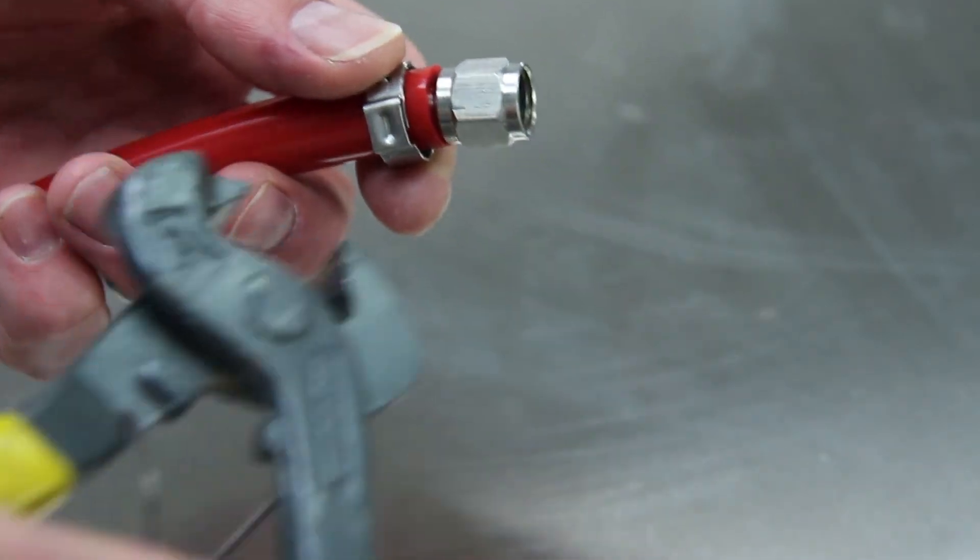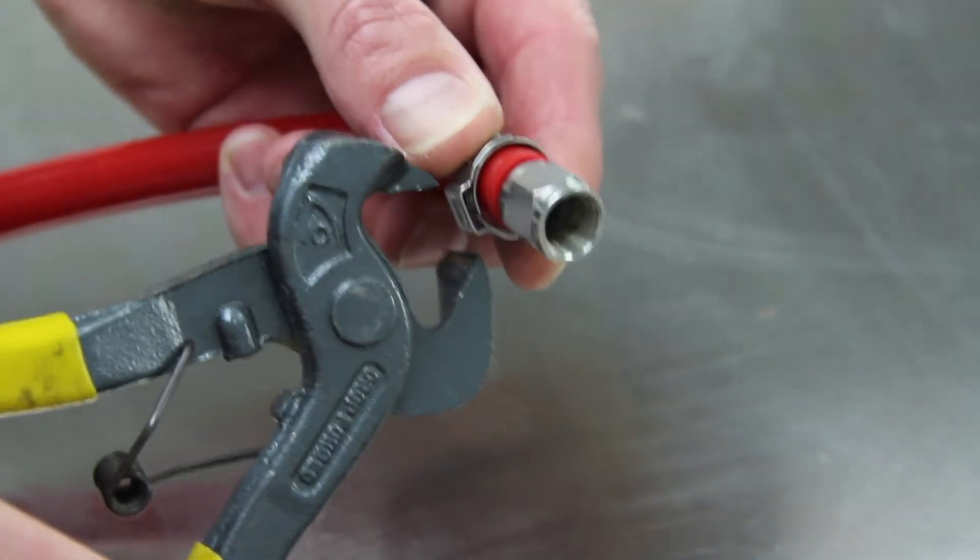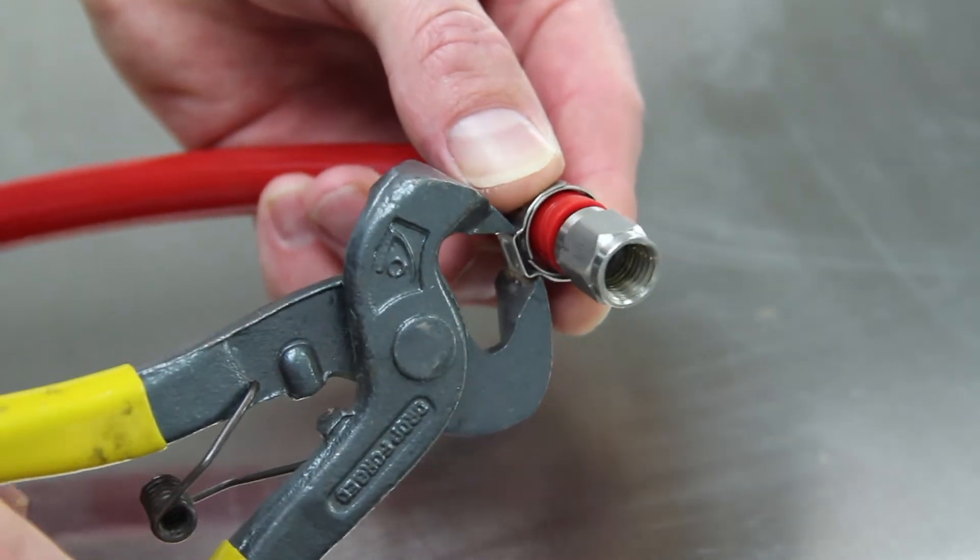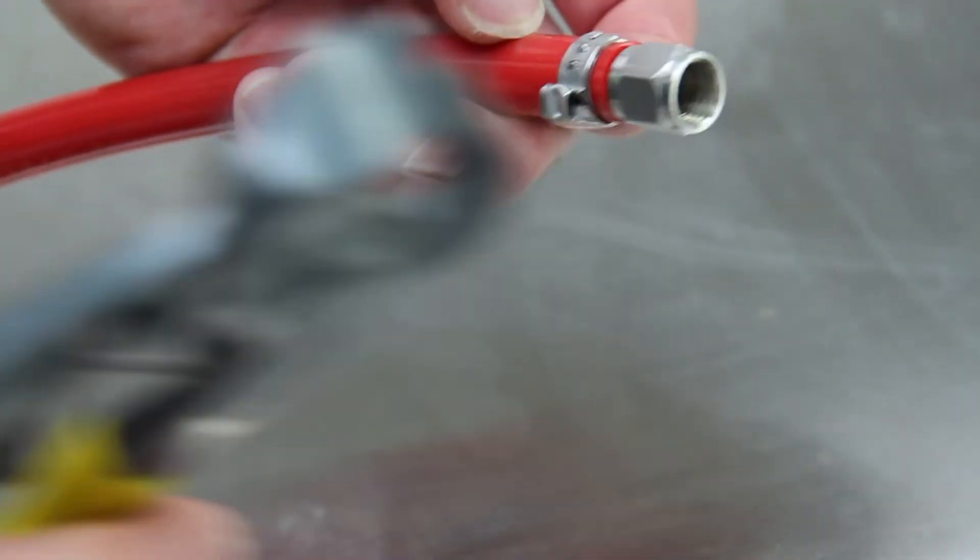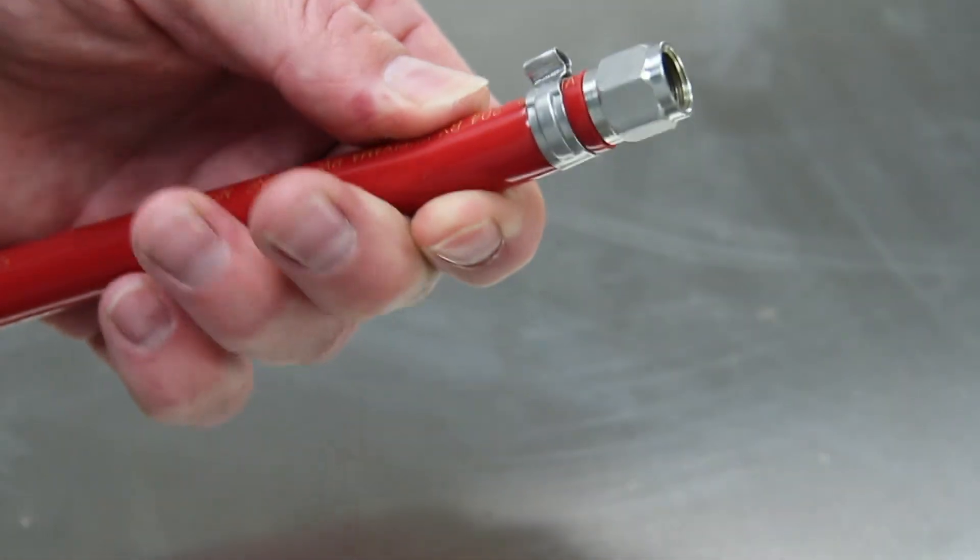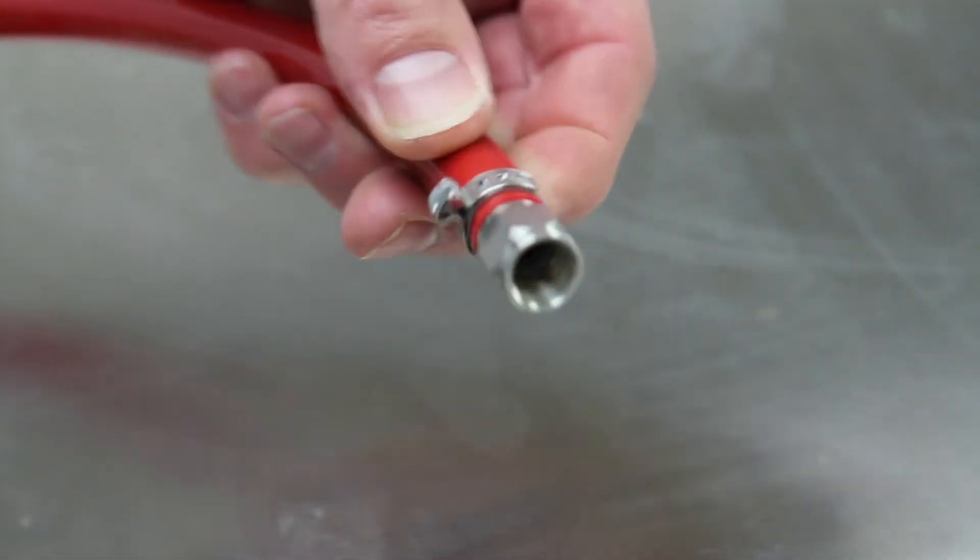Unlike the worm clamp where you can use a flathead screwdriver to tighten and loosen, the Oetiker clamp requires an Oetiker clamp tool. These clamps are a one-time use, but once clamped, you virtually never have to worry about leaks.